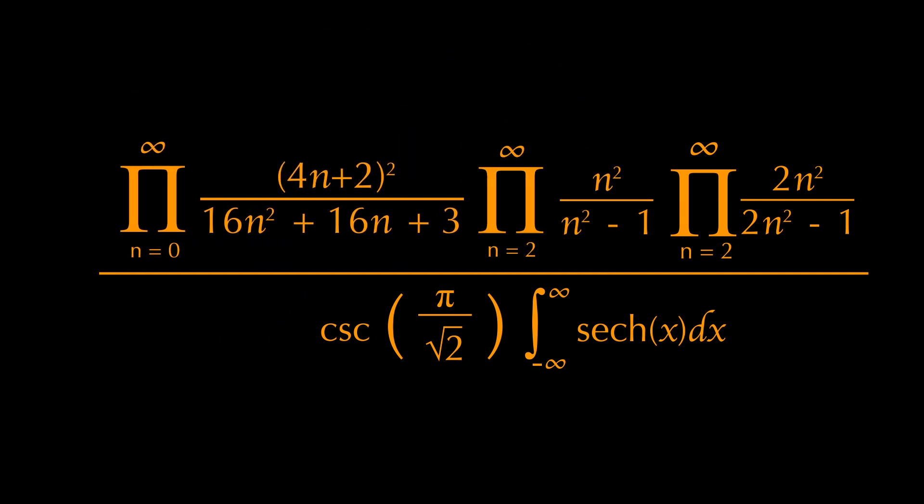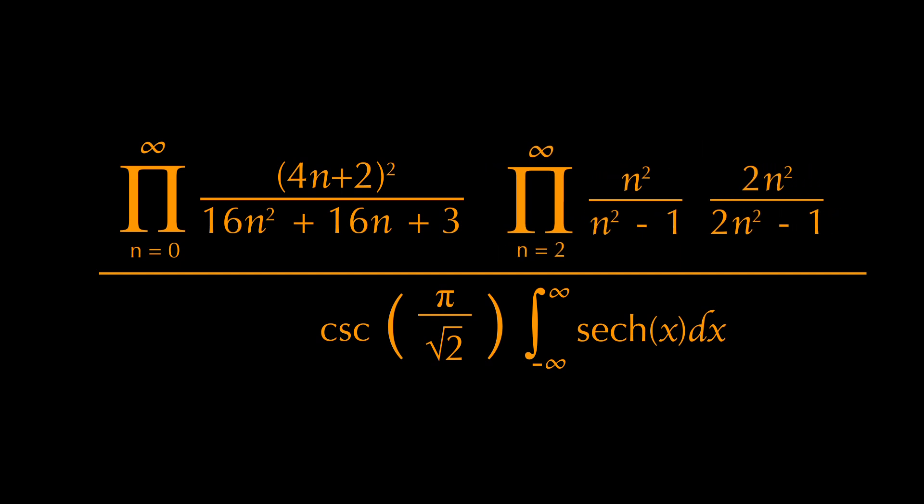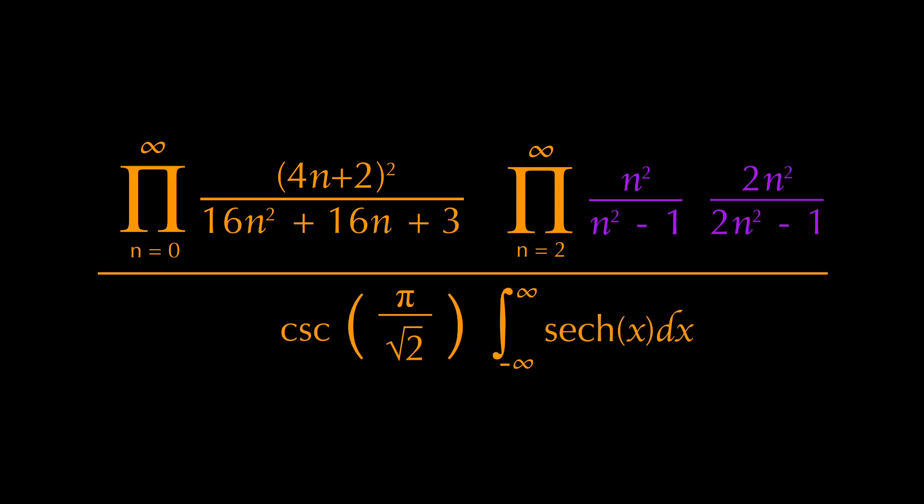We can shove that thing in there instead of the 2. Better yet, over here. And look, those two are identical. Which means we can just shove this in there because after all, we are just multiplying those two. Which also means we can reduce this whole thing into this.